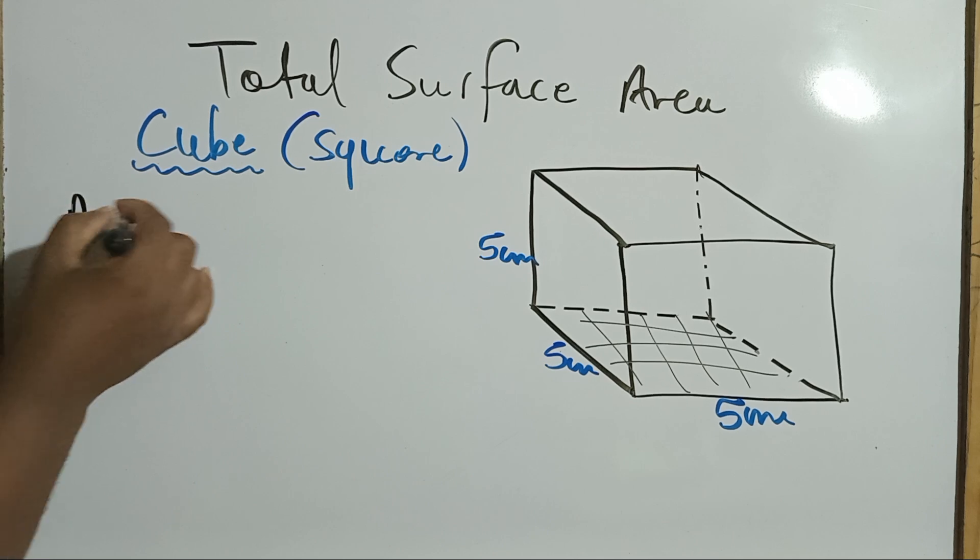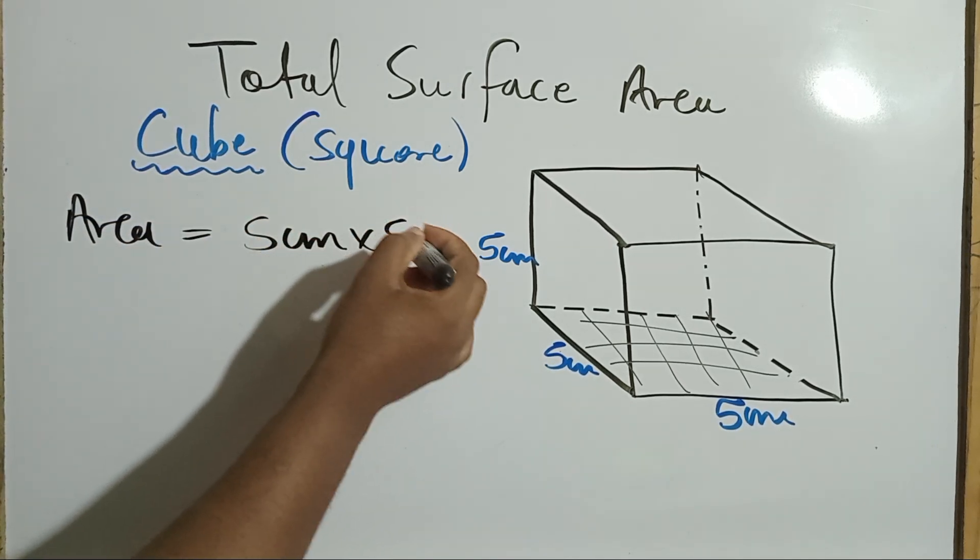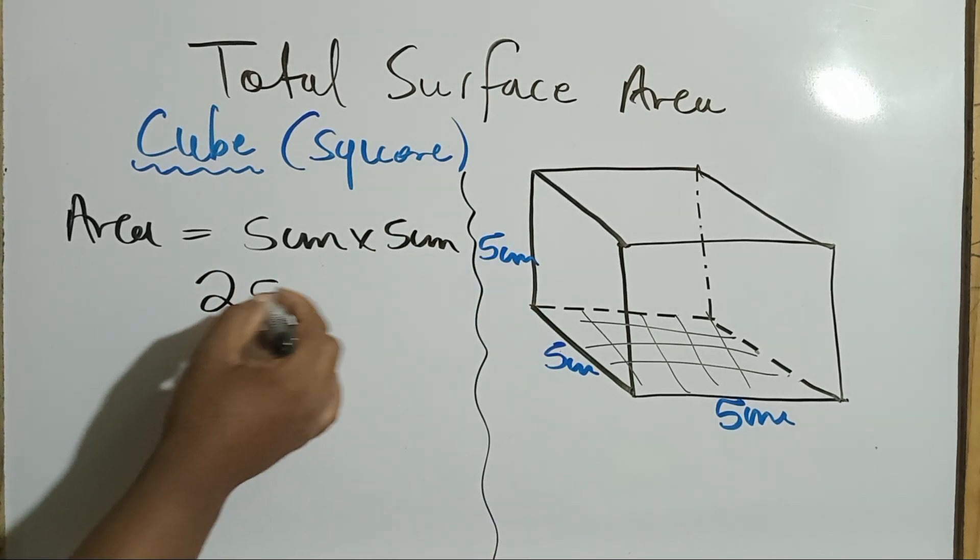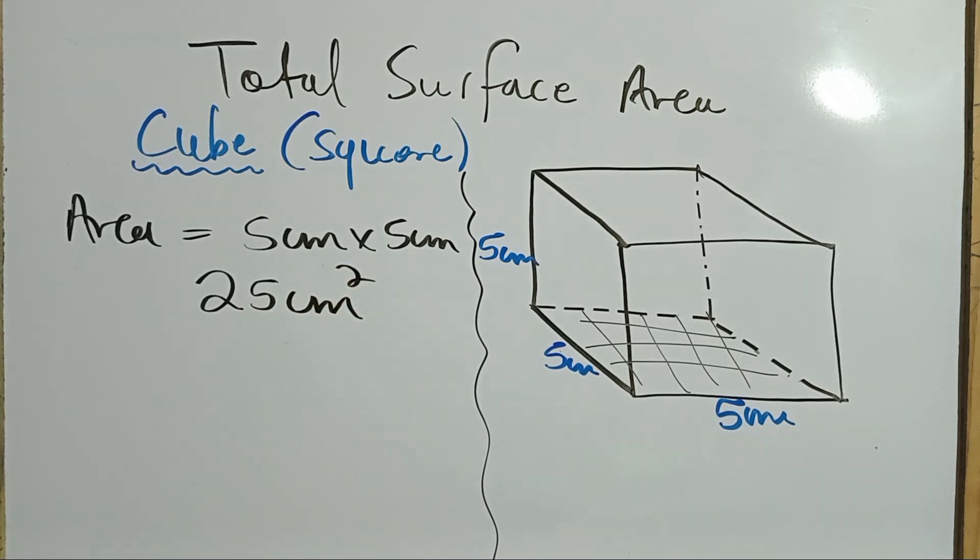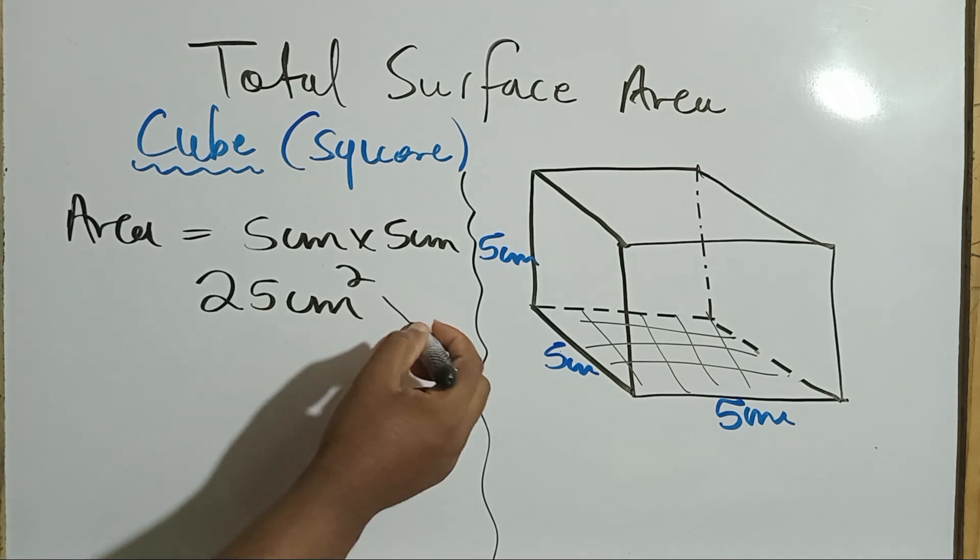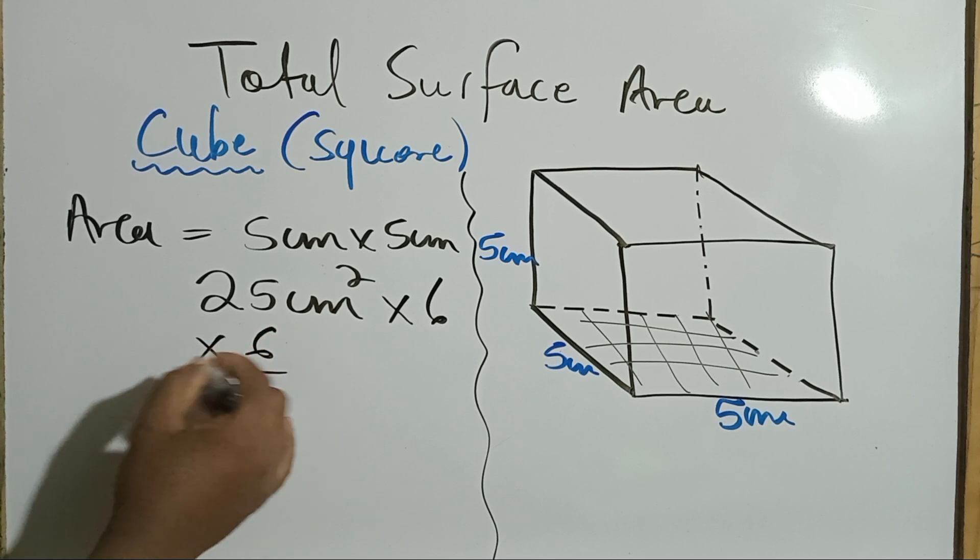So, the area would be five centimeters times five centimeters and of course, that would give us 25 centimeters squared. So, because we have six of them, all six would have the same area of 25, so we can multiply it by six.